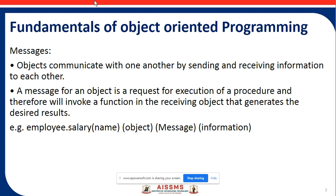The next point is messages. Objects communicate with one another by sending information to each other. From source to destination, if you want to communicate, we need some communication channel or media. A message for an object is a request for execution of a procedure, and it therefore invokes a function in the receiving object that generates the required results. For example: employee.salary(name) — object message or information.